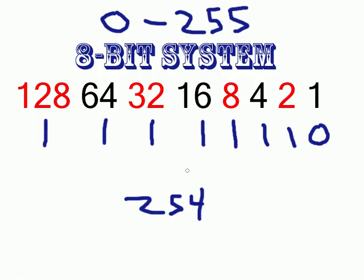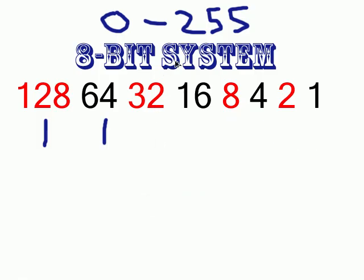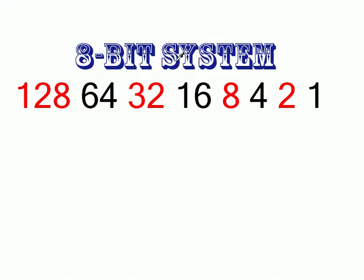Those are the basics on how binary code works and how you can use 1s and 0s to get any number you ever dreamed of. Your only limitation is how many bits are in your system, and that's what engineers are trying to develop — bigger bit systems so we can transfer more data and have a bigger range of numbers.